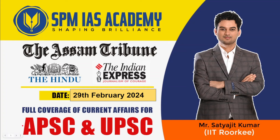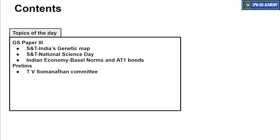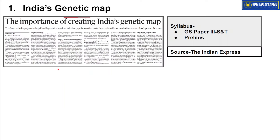Hello and welcome to PMIS Academy. Today we will analyze important newspaper articles of 29th February 2024. You can download the PDF version of today's newspaper analysis by clicking the link in the comment section. The first topic is about India's genetic map, which is important from GS Paper 3 Science and Technology point of view.